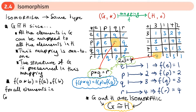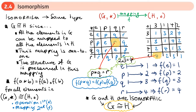This holds for all elements in G with binary operation star, where G is isomorphic to H with binary operation dot. So: operation first (star), then mapping second (f) — that is the same as mapping first (f), then operation second (dot).